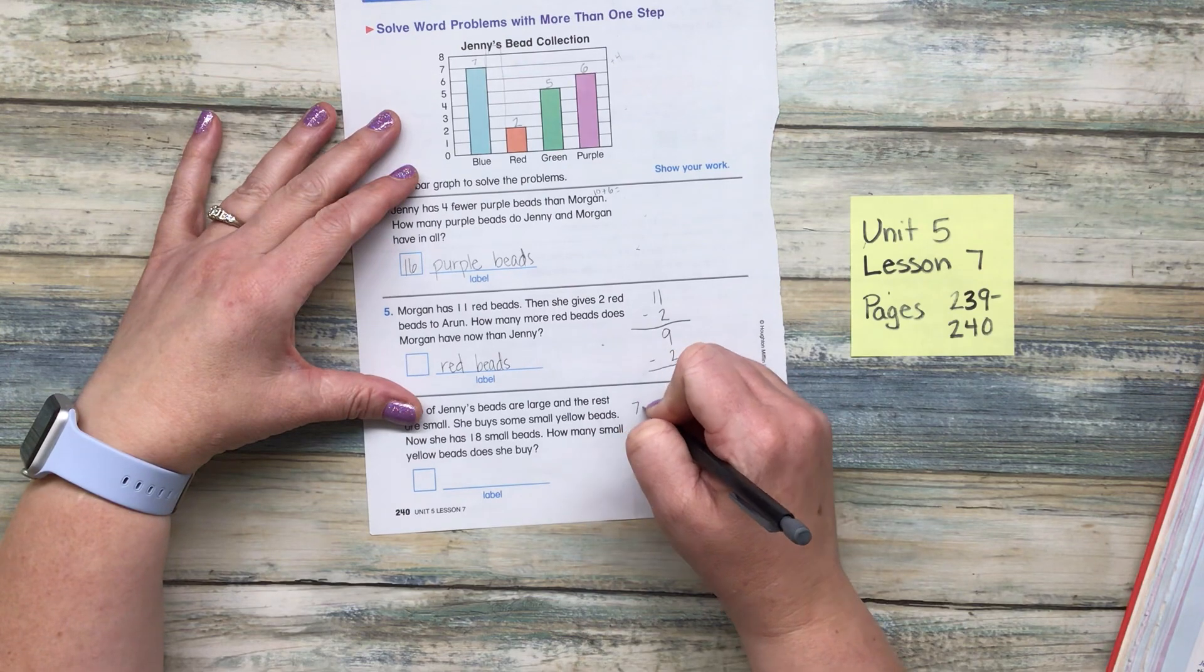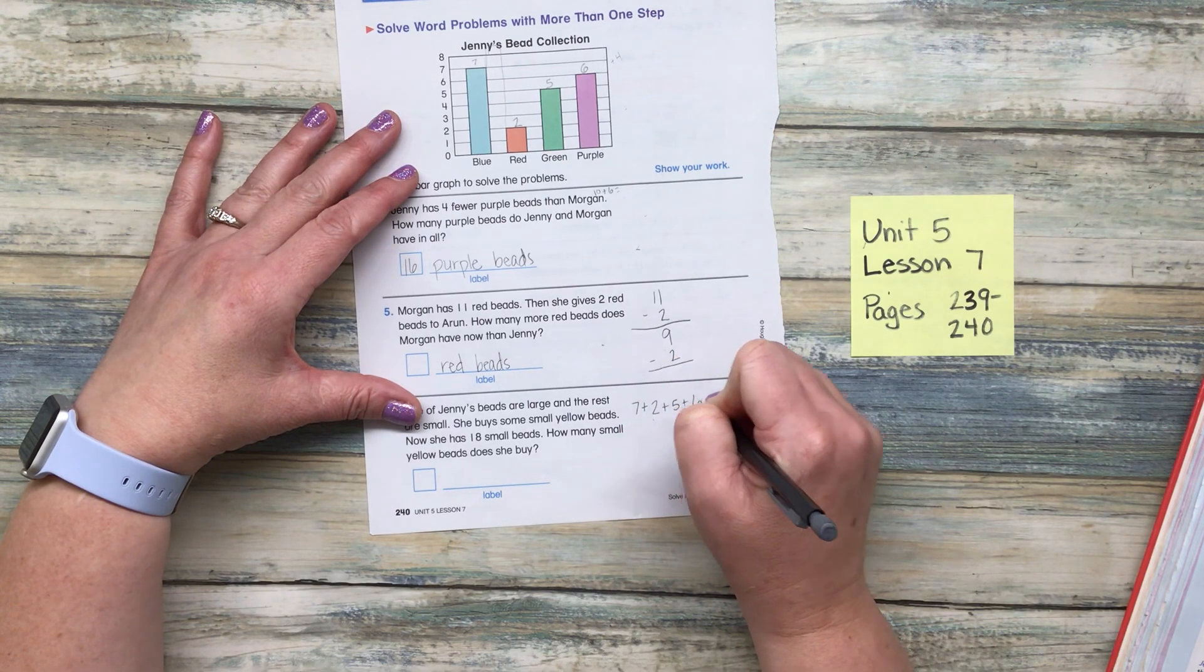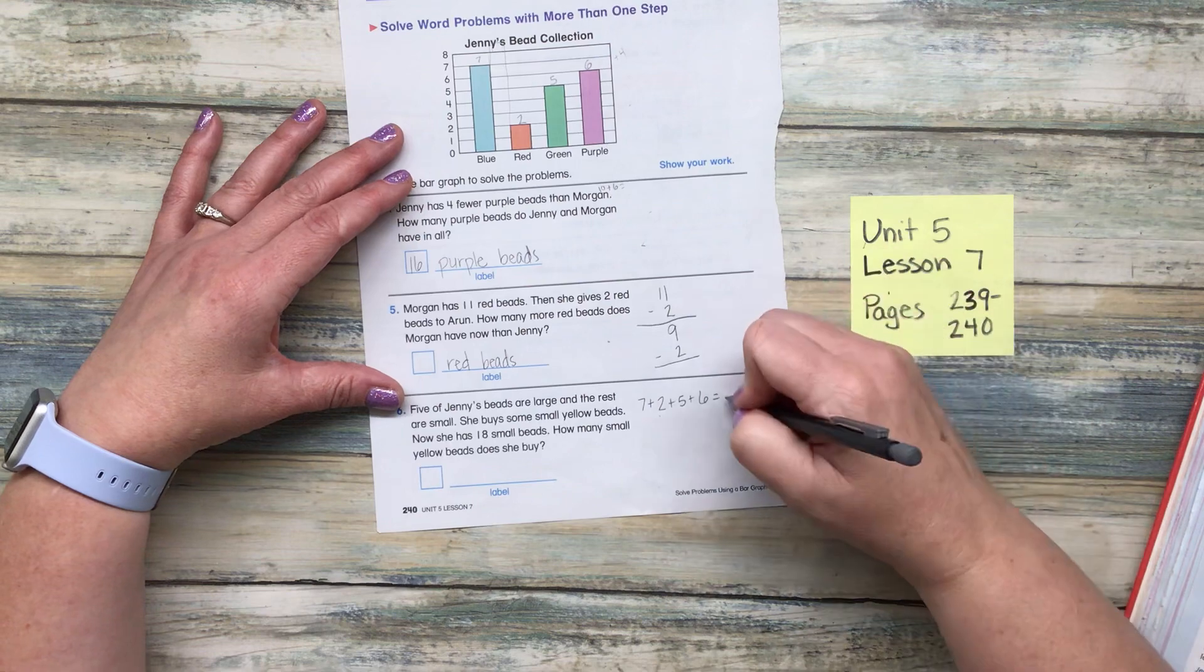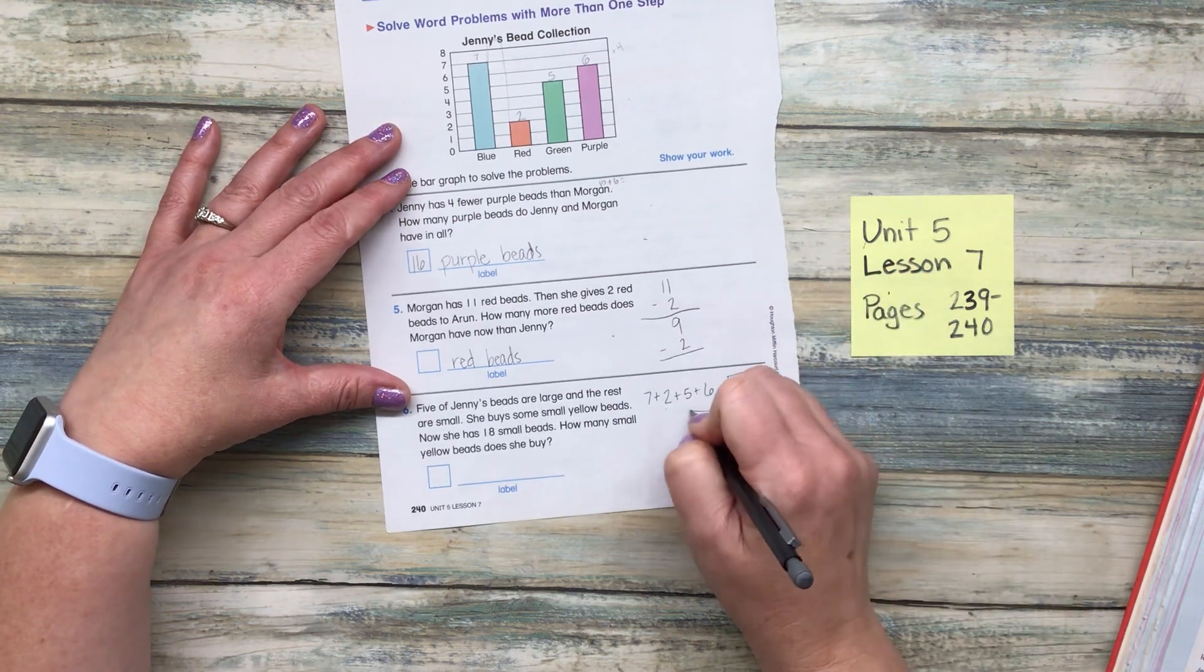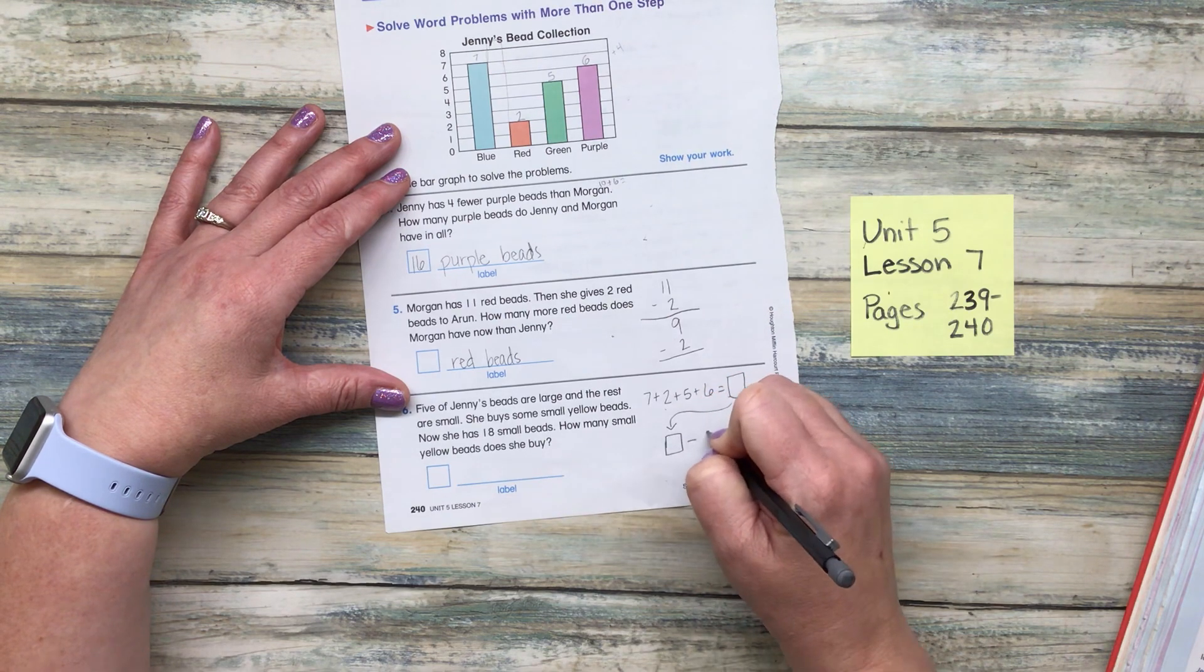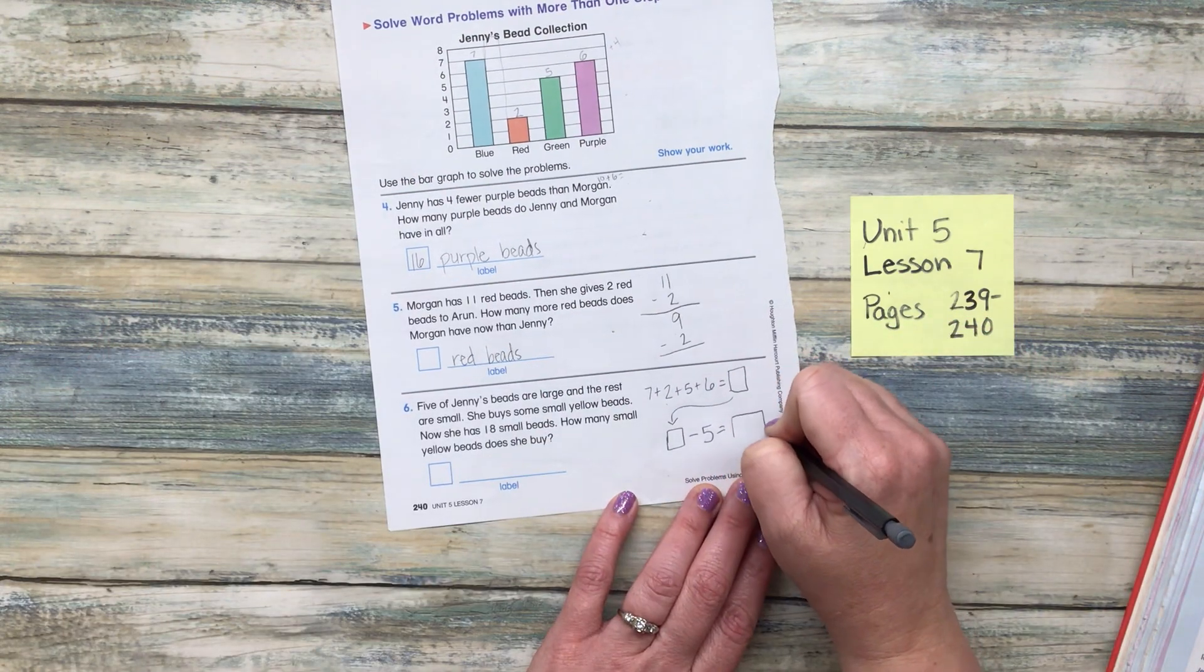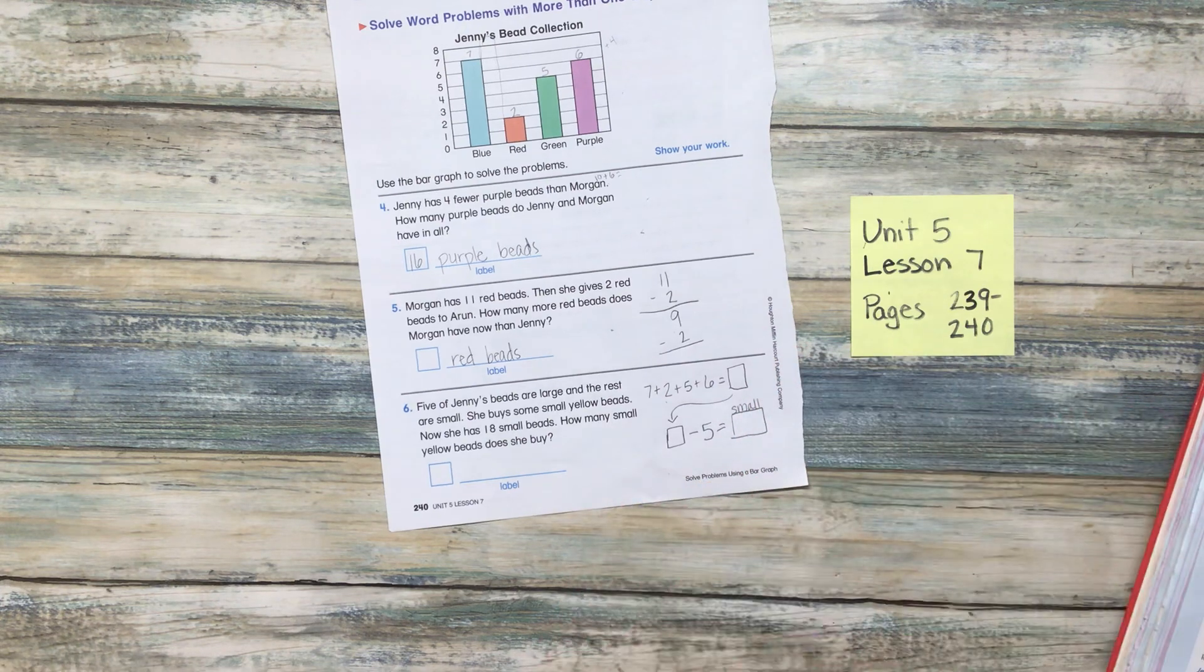Yeah. We need to add them all up. Seven plus two plus five plus six. And we're going to take that total. And we're going to minus five from that. And that is going to be how many small beads she has.